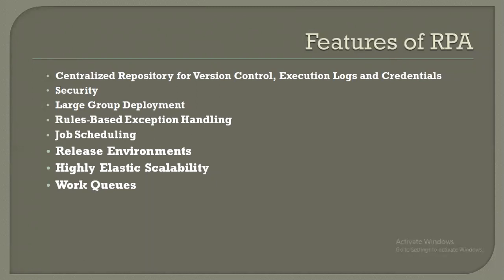The next point is job scheduling. Developing the process is one step. Once you've developed it in the studio environment, you do unit testing and deploy the process. Then someone has to execute it — that someone is the robot. You schedule when to execute a process; in UiPath the server is the Orchestrator, and in Blue Prism it's the Control Room. Once you schedule the job, the bot picks it up and executes it — that is job scheduling.